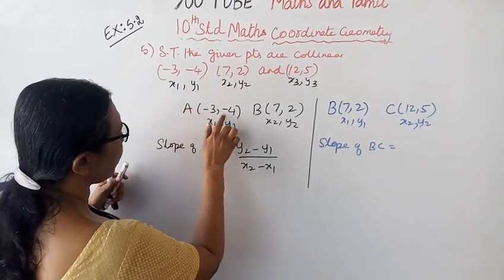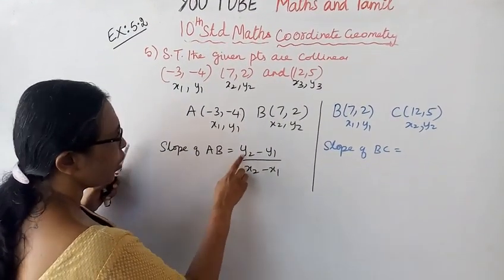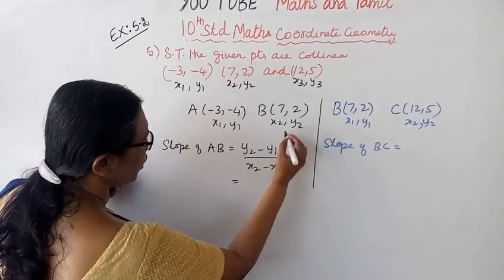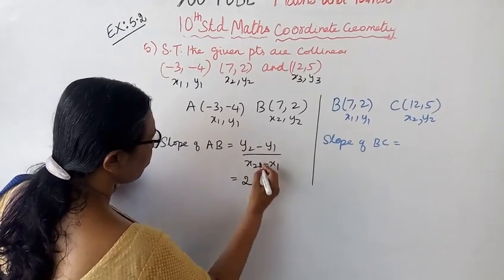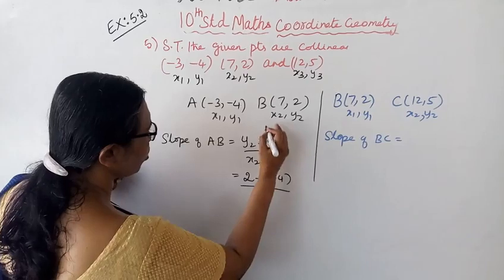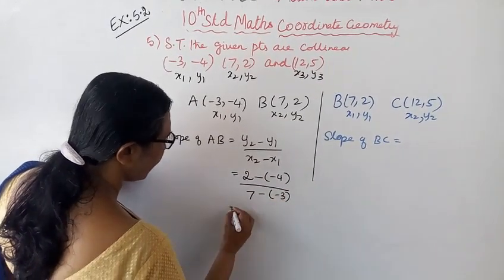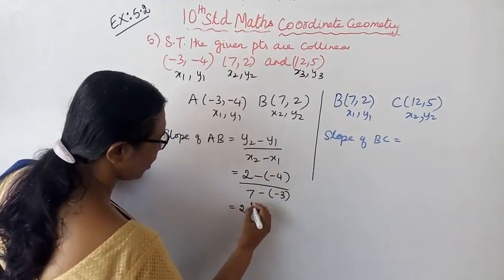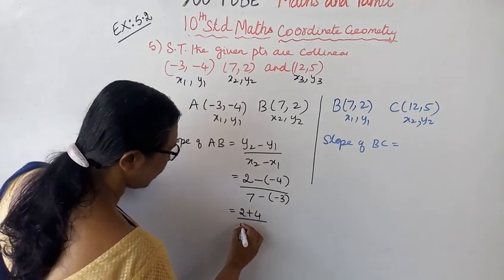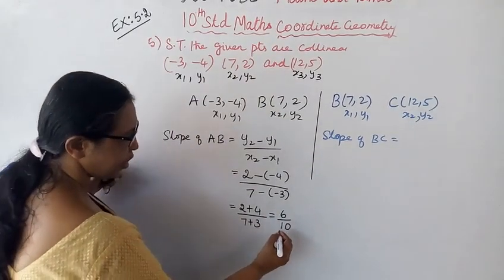A is at (-3, -4) and B is at (7, 2). Slope of AB equals y2 minus y1 by x2 minus x1. That's 2 minus (-4) by 7 minus (-3), which equals 2 plus 4 by 7 plus 3, that is equal to 6 by 10.